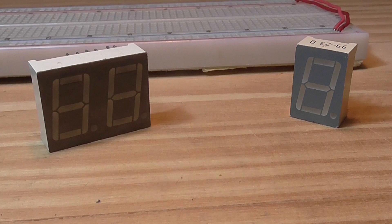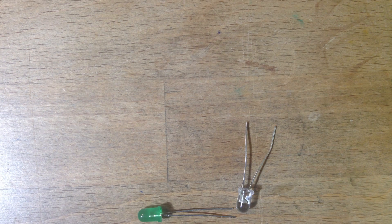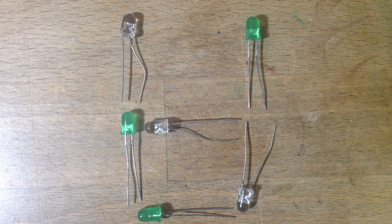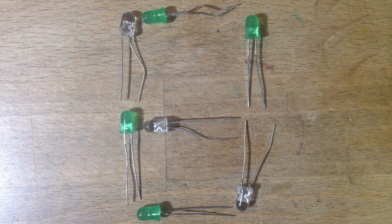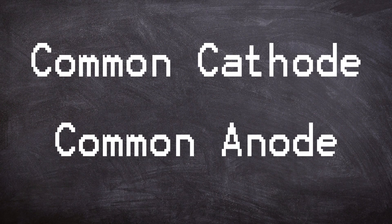What is a 7-segment display? If you were to open one, you would see just a bunch of LEDs strapped together sharing the positive or negative side. This brings us to the common anode or cathode configuration.